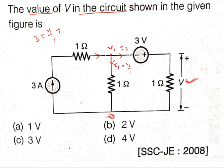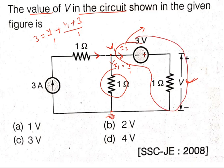Plus the current in the other branch, I2, which can be written as V1 plus 3 divided by the total resistance of 1 ohm. So the equation is: 3 equals V1 by 1 plus (V1 plus 3) by 1. The voltage on the right side of that branch is V1, plus 3 volts, over a 1 ohm resistance. Simplifying: 3 equals 2V1 plus 3, so 3 minus 3 equals 0, giving 2V1 equals 0.